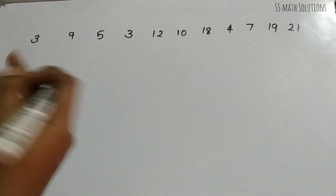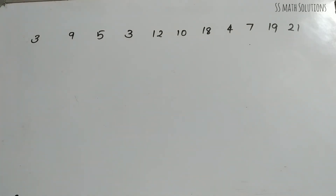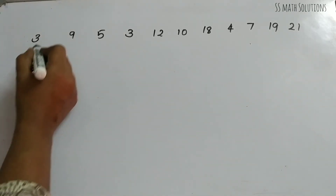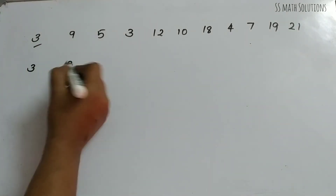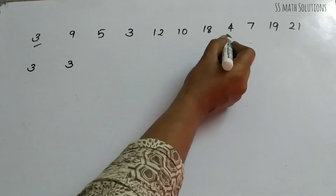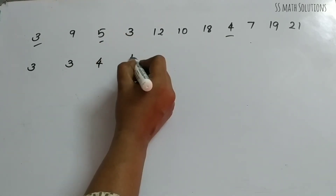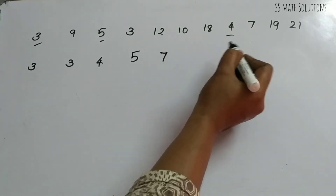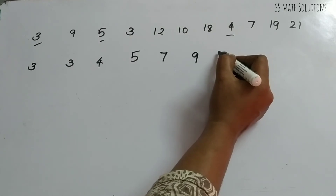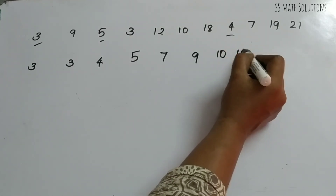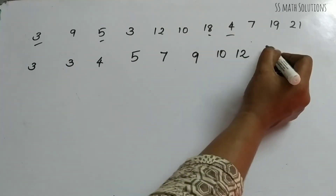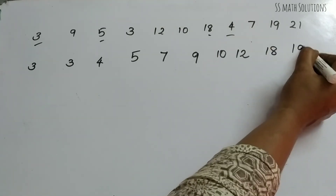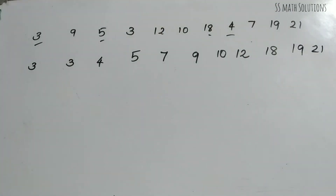So firstly, arrange the data in ascending order. The arranged values are: 3, 3, 4, 5, 7, 9, 10, 12, 18, 19, and 21. This is the ascending order. Whenever you need to find the median, first write the values in ascending order.